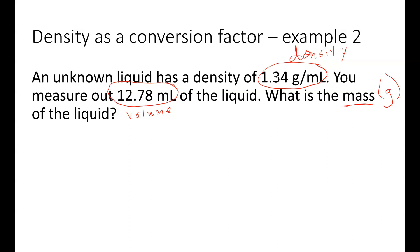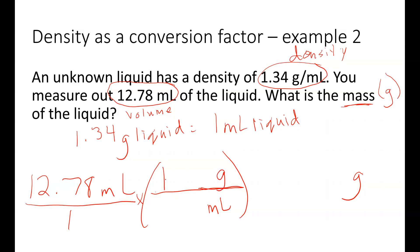Our density can be written as equivalents. So we have 1.34 grams of liquid equals 1 milliliter of liquid. We know we have 12.78 milliliters and we want to find the number of grams. Place this over 1. I'm going to be multiplying by a fraction. Milliliters is on the top here, so we're going to have milliliters on the bottom. We want grams. We have 1.34 grams for every 1 milliliter.